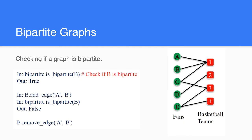Next we are going to test some functions working on the bipartite graph. To know whether a graph is bipartite or not, we can use the function bipartite.is_bipartite(graph_name). You can see the graph in the demonstration — A, B, C, D, E connected to 1, 2, 3, 4 — that is a bipartite graph, so the function returns True. Now if we add an edge A to B, the graph is no longer bipartite, and the function returns False.